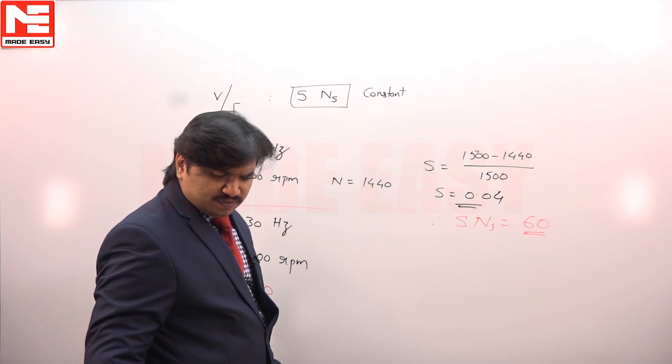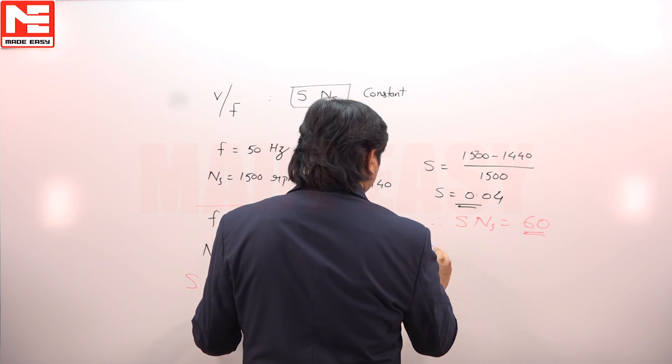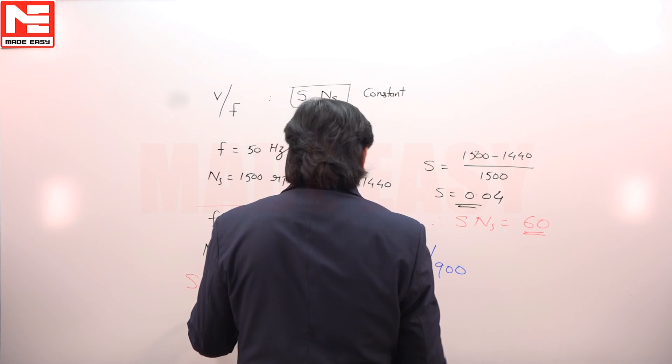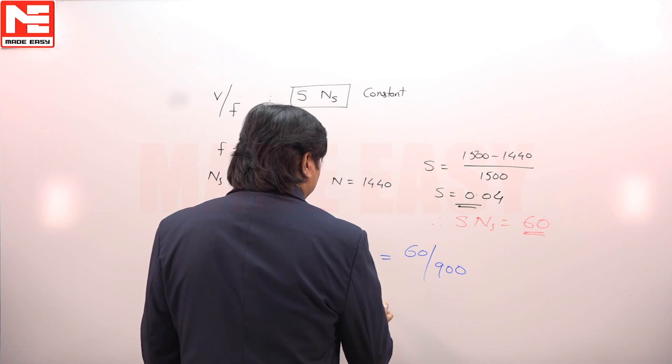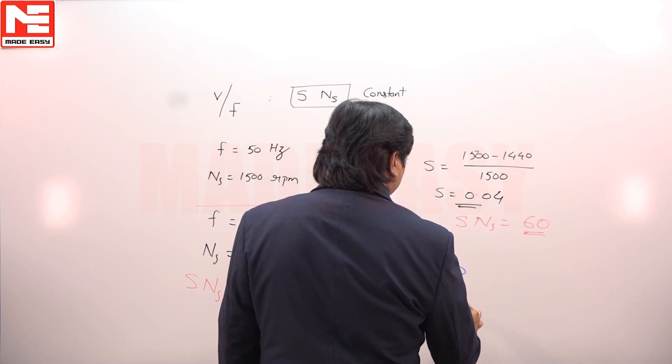So S equals 60 by 900. We get slip 0.067.